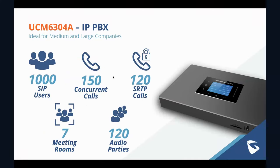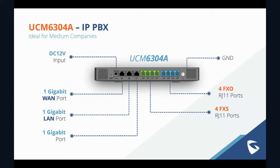Moving up to the 6304A: 1,000 users, 150 concurrent calls, seven meeting rooms for 120 audio participants. Once you get up to 1,000 users, we're talking more along the lines of medium to large companies. Just like the UCM 6300 series, the 6300 Audio Series has a variety of models that can provide an ideal option for anyone from a small mom-and-pop shop all the way up to a global enterprise. The 6304A has 4 FXS and 4 FXO ports, plus those same three gigabit ports and power port.